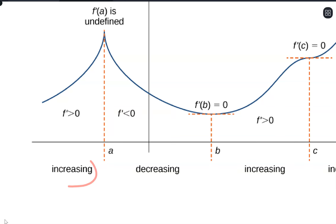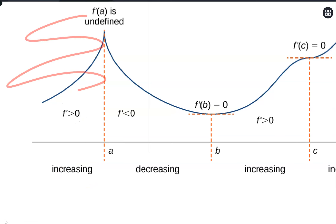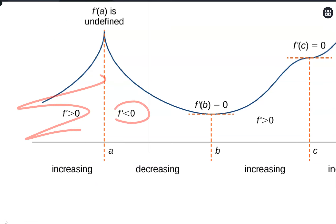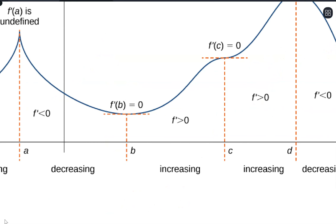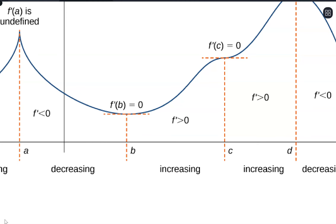Then if our original function is increasing, that's where the derivative is positive, so we would be graphing above the x-axis. And then when our function's decreasing, where the derivative is less than zero, we'd be graphing below the x-axis. So we would just switch between above and below the x-axis depending on whether our original function was increasing or decreasing, because that relates to our derivative function being positive or negative. And then when we switch these trends, that's typically where our derivative is equal to zero, so it ends up as just a coordinate on the x-axis.